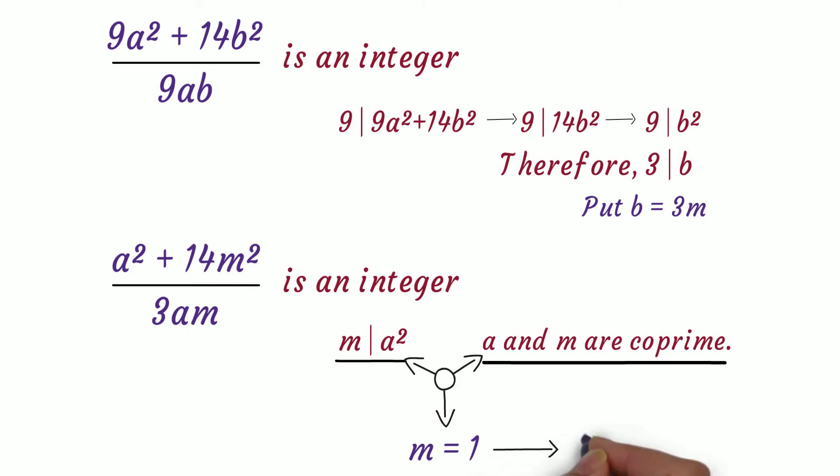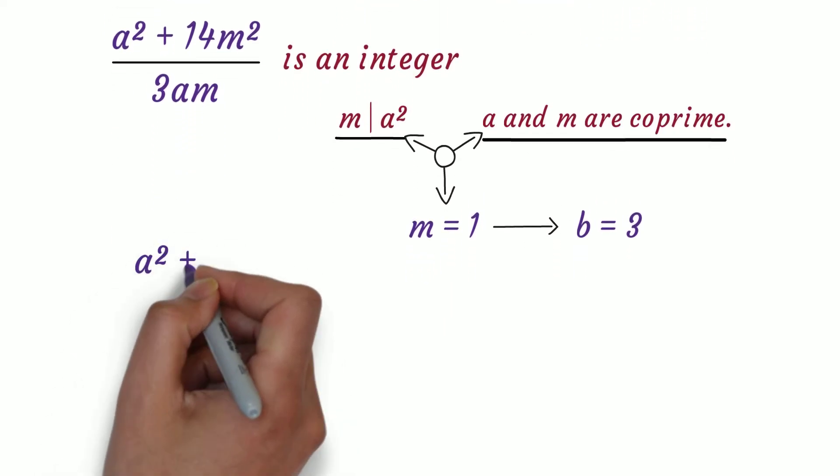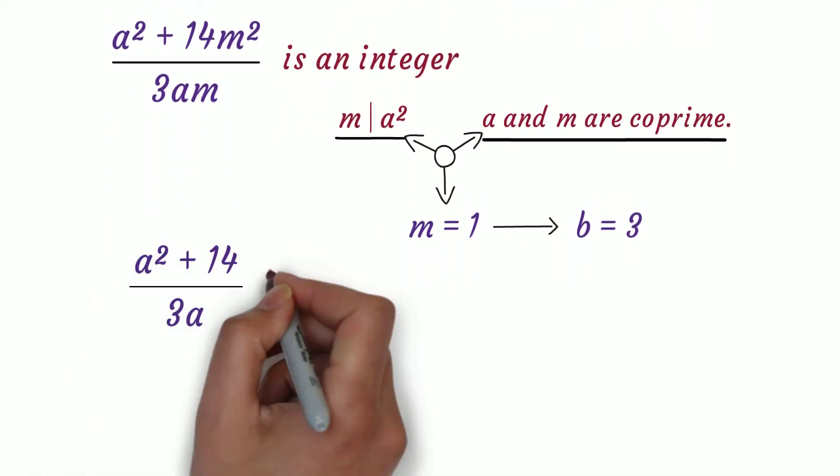So if m = 1, we have b = 3. Substituting back in the given expression, we get (a² + 14)/(3a) is an integer.